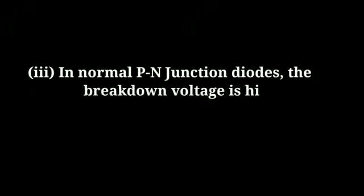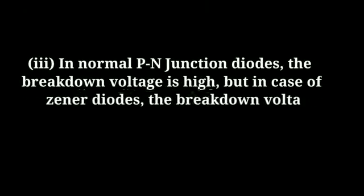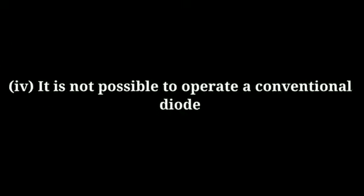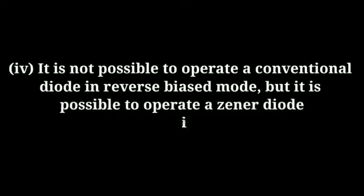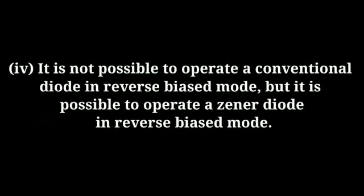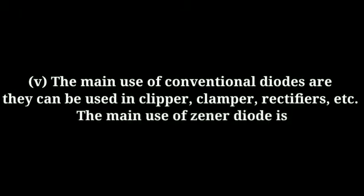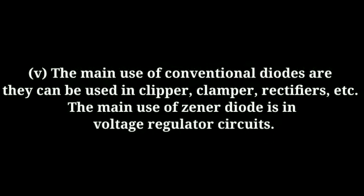In a normal PN junction diode the breakdown voltage is high, but in the case of a zener diode the breakdown voltage is sharp. It is not possible to operate a conventional diode in reverse biased mode, but it is possible to operate a zener diode in reverse biased mode. The main uses of conventional diodes are in clippers, clampers, and rectifiers, while the main use of a zener diode is in voltage regulator circuits.